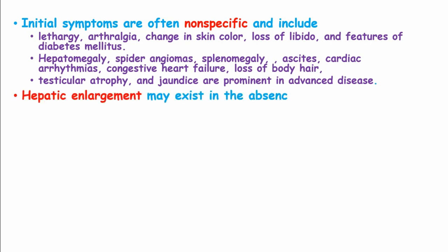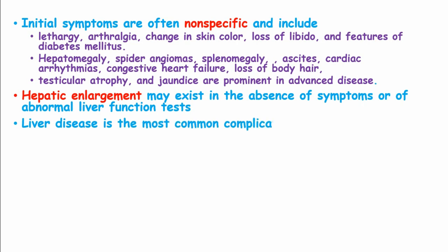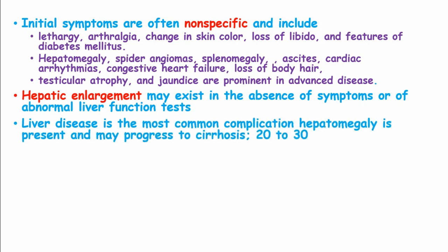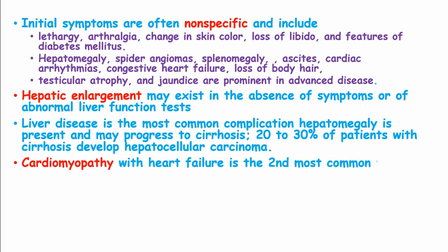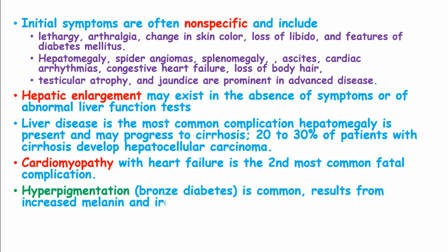Hepatic enlargement may also exist in the absence of symptoms or abnormal liver function tests. Liver disease is the most common complication; hepatomegaly may progress to cirrhosis, and in about 20-30% of patients, hepatocellular carcinoma develops. Cardiomyopathy with heart failure is the second most common fatal complication of hemochromatosis. Hyperpigmentation, known as bronzing or bronzed diabetes, is common and results from increased melanin and iron in the dermis.